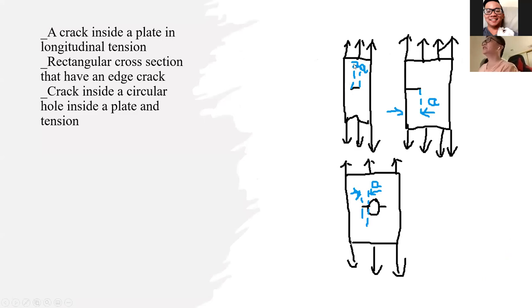We have to find beta for any given case. For example, a crack inside a plate under uniaxial tension, a rectangular cross-section with an edge crack, and a crack beside a circular hole inside a plate in tension.